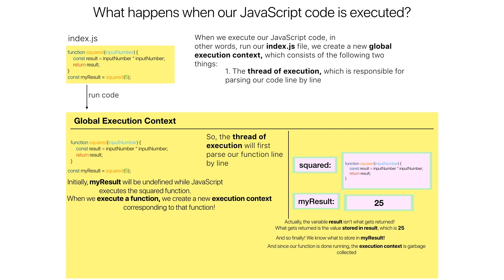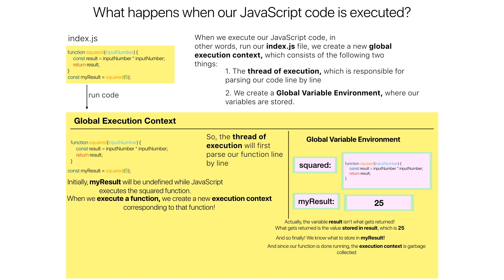The second thing that is part of the global execution context is the global variable environment, which is where our variables are stored. In our index.js file we declared a function and created the variable my_result, which holds the return value from executing squared with five. Typically when we write programs we declare multiple functions and variables, and those variables and function declarations are collectively known as the global variable environment.